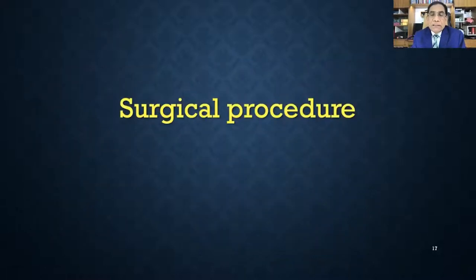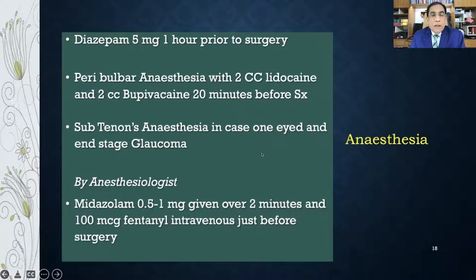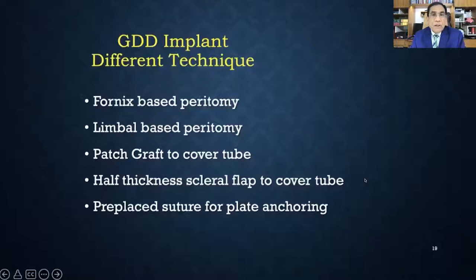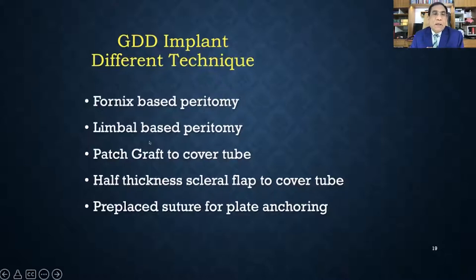For the AGV implant, I prefer peribulbar anesthesia with 2cc lidocaine and bupivacaine. My anesthetist assists with intravenous midazolam and fentanyl so the patient is calm. It is a painless surgery taking 45 minutes to one hour. For one-eyed patients or rest glaucoma, I prefer sub-Tenon's anesthesia. There are different techniques — fornix-based or limbus-based peritomy, patch graft, scleral flap — and many ways of doing it.